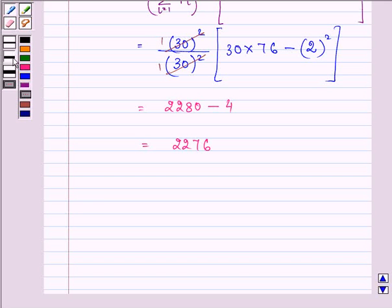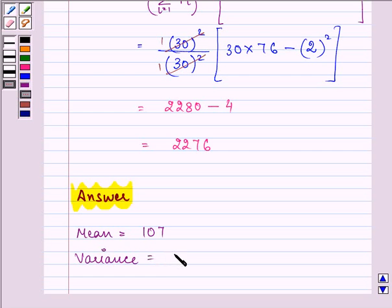So we can write the answer as mean was found above as 107 whereas the variance is equal to 2276. So this ends the session. Hope you liked it. Have a nice day.